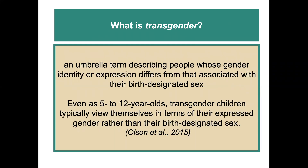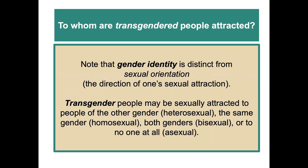Transgender is an umbrella term describing people whose gender identity or expression differs from that associated with their birth-designated sex. Even as five- to twelve-year-olds, transgender children typically view themselves in terms of their expressed gender rather than their birth-designated sex. Note that gender identity is distinct from sexual orientation — the direction of one's sexual attraction. Transgender people may be sexually attracted to people of other genders, the same, both, or not at all.